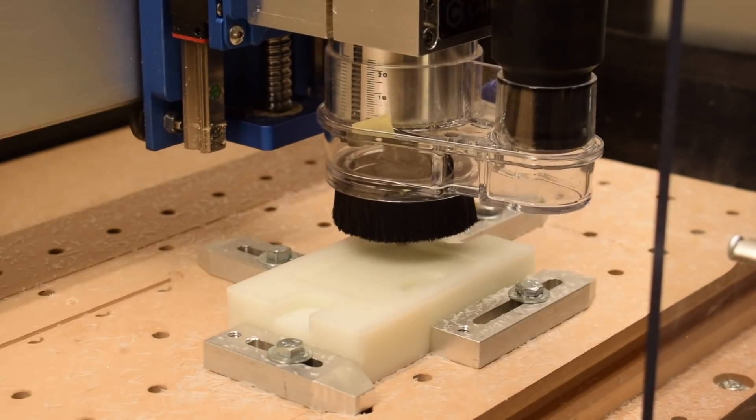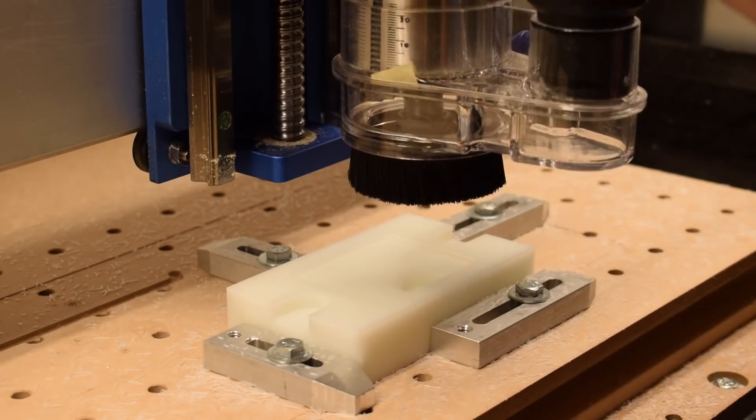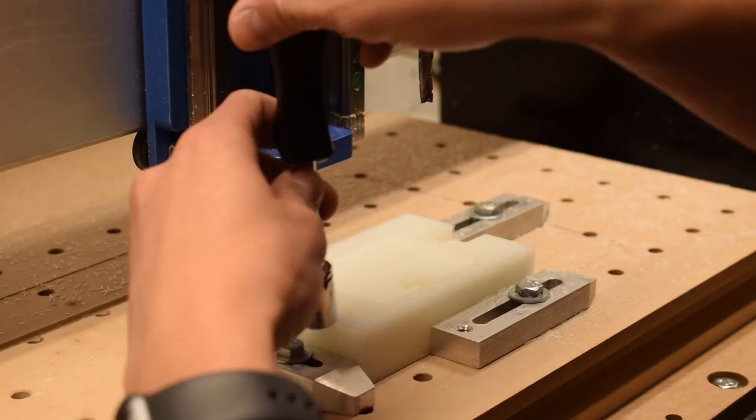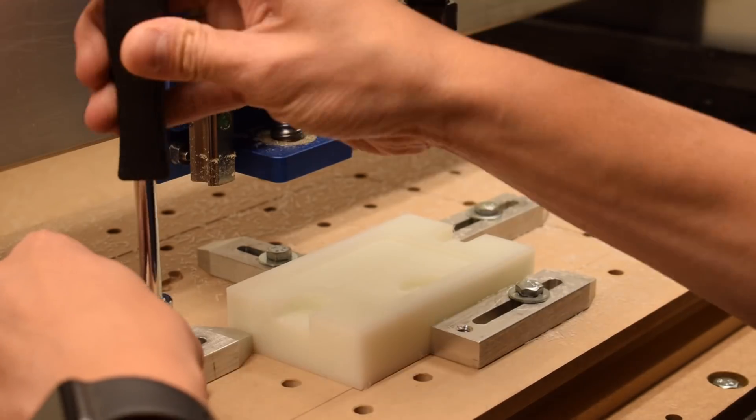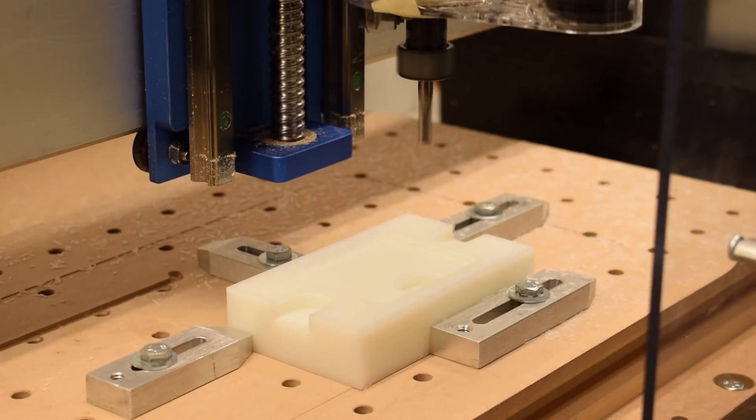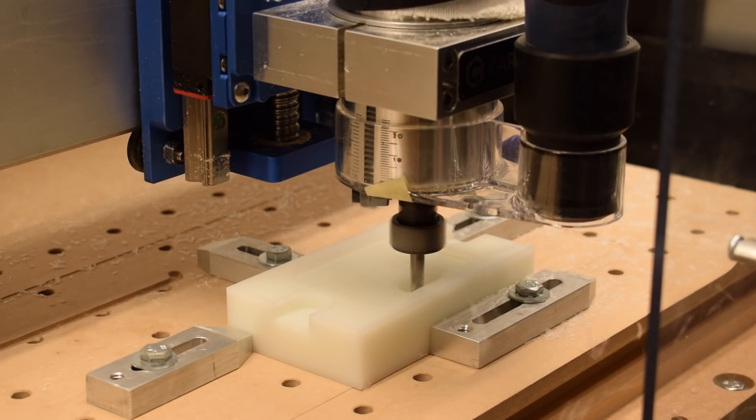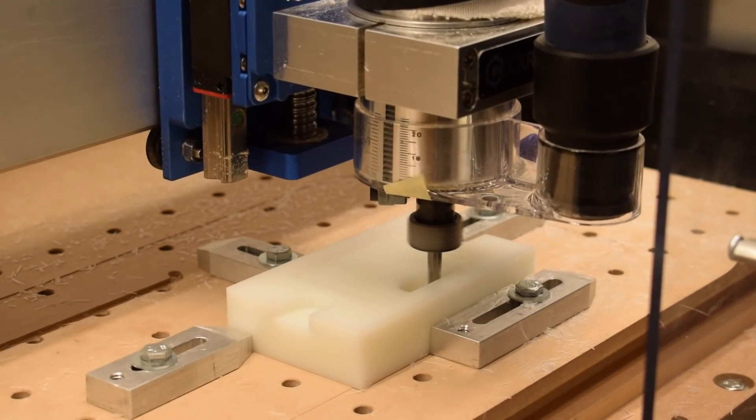Partway through this toolpath, I realized that my clamps were somewhat precariously positioned, so I paused my program to make some adjustments. I also pulled off the brushes on the dust chute since I was cutting a little too low to use them, and I also wanted better visibility.